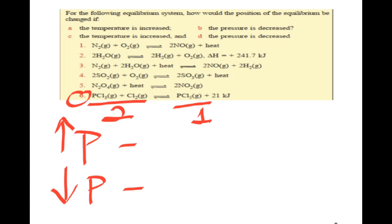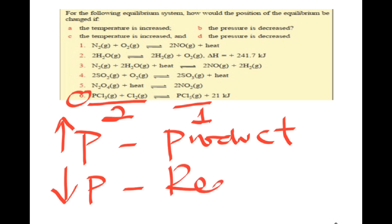Number six: the heat is written on the product side, so it is an exothermic reaction. For the pressure effect, count the number of moles on the reactant and product sides. If we decrease the pressure of the system, the reaction will proceed towards the reactants.